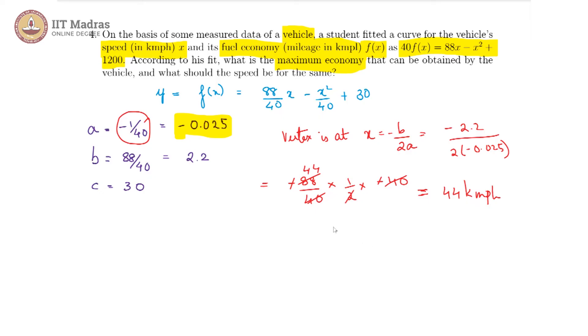And what is the maximum economy at this particular speed? We can calculate from our equation directly. We have f of 44 is equal to 88 by 40 into 44 minus 44 the whole square, so 44 into 44 divided by 40 plus 30.